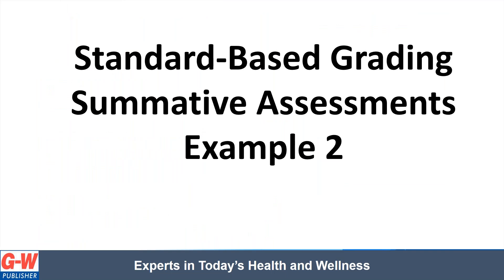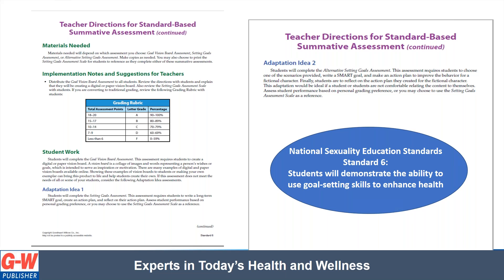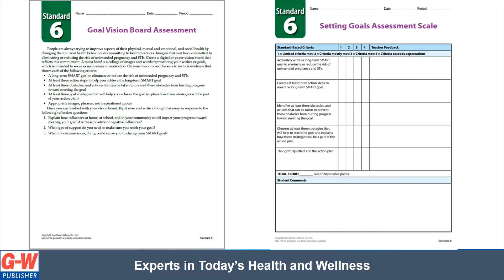Let's look at another example of a summative assessment. This example will be from the National Sexuality Education Standards, Standard 6 on goal setting related to preventing unintended pregnancy and sexually transmitted infections. The format is very similar with student work, Adaptation Idea 1, and Adaptation Idea 2. This is the main assessment: students will create a digital or paper vision board showing evidence of the criteria listed, which comes from the performance indicators of the standards. After completion, students would write a thoughtful essay responding to questions such as: explain how influences at home, at school, and in your community could impact your progress towards meeting your goal.